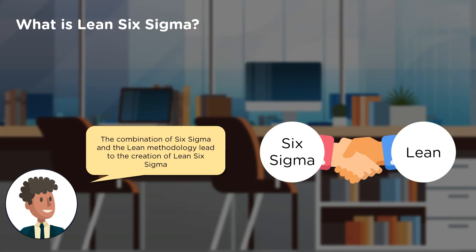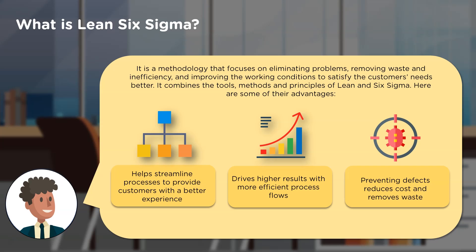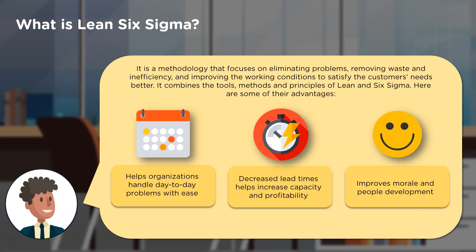So what exactly is Lean Six Sigma? The combination of Six Sigma and Lean methodology led to the creation of Lean Six Sigma — a methodology that aims to solve problems, remove waste or inefficiency, and improve working conditions of employees so they can serve customers better. It combines the tools, methods, and principles employed in both Lean and Six Sigma. Its advantages include providing customers with a better experience by streamlining processes, driving higher results through efficient workflows, reducing cost, removing waste, preventing defects, helping organizations handle day-to-day problems, increasing capacity and profitability through decreased lead times, and supporting people development and improving organizational morale.